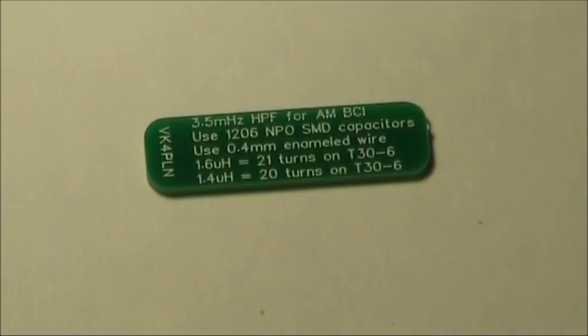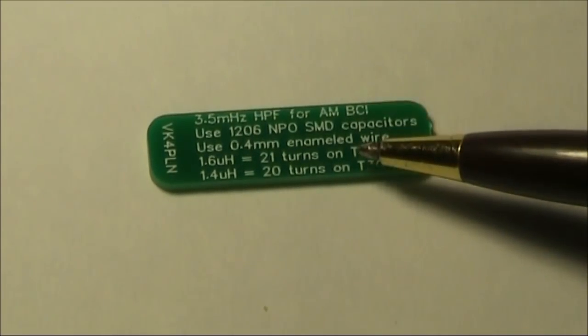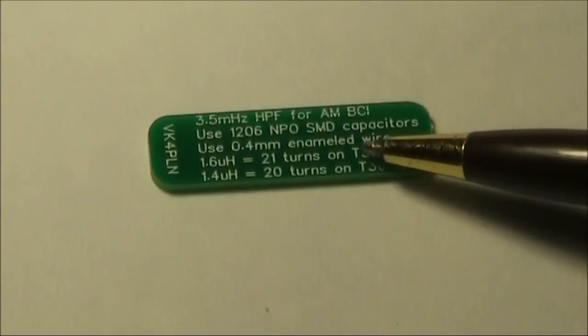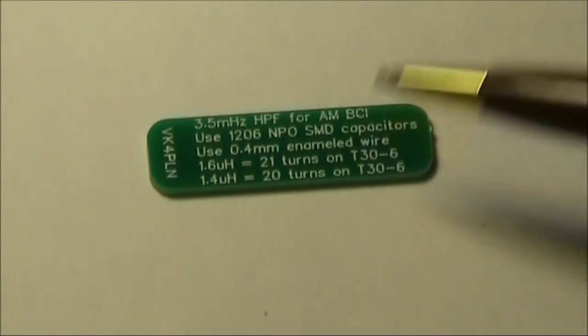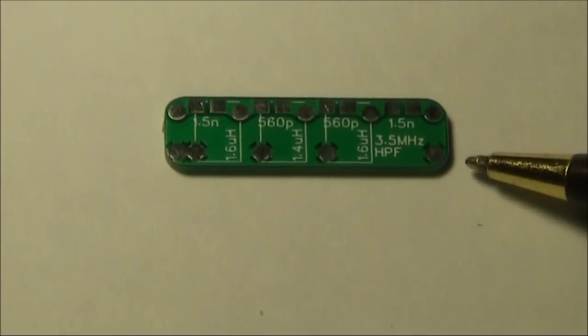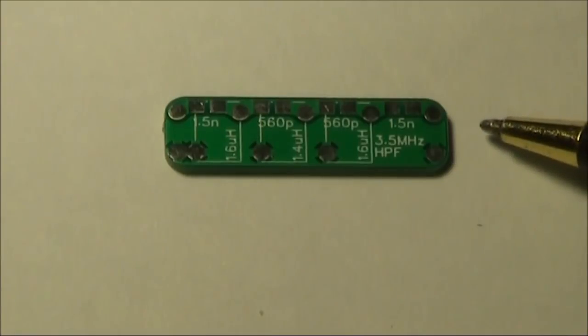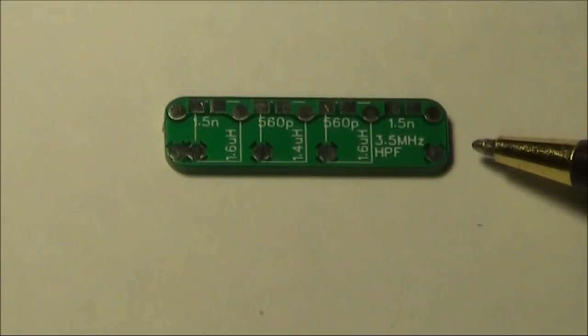Next, we have the high pass filter board. The instructions are ingeniously written on the back of the board and include the number of turns on the toroids that you're using. As I demonstrated in a previous video, if you don't have a high pass filter in your Micro-BitX, then you really do need one.